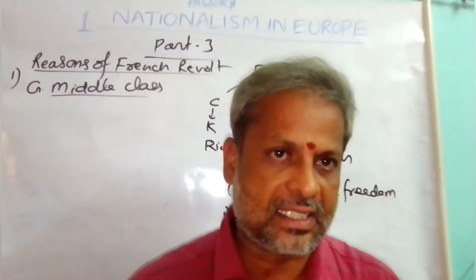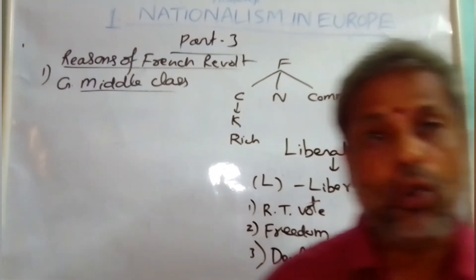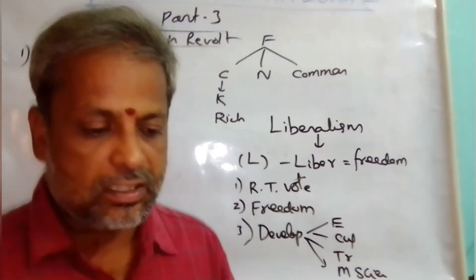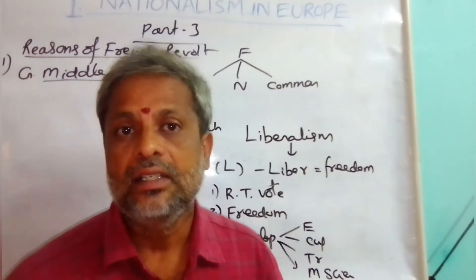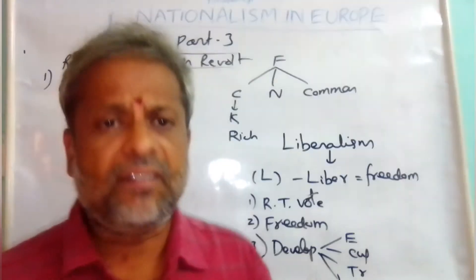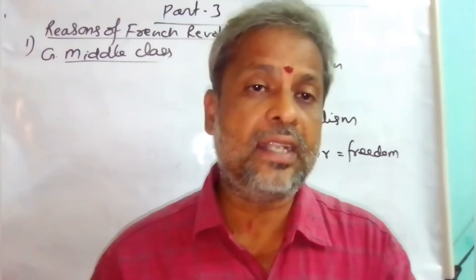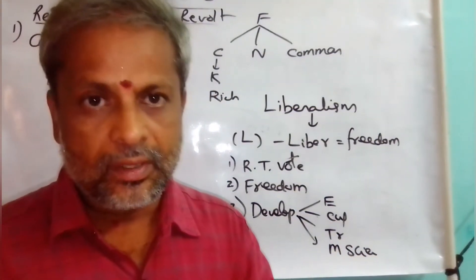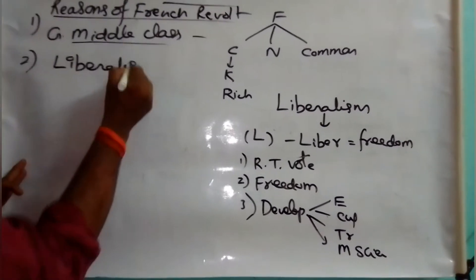Liberalism was not liked by the leaders because they required total power in the country and did not want to give any rights to the people. On one side, the French people demanded liberalism, while on the other side, French leaders expected monarchy and despotism. A severe struggle was going on between liberal-demanding common people and the monarchial-demanding kings. Ultimately kings did not accept liberalism, making the growing middle class and the demand for liberalism two key reasons for the revolution.